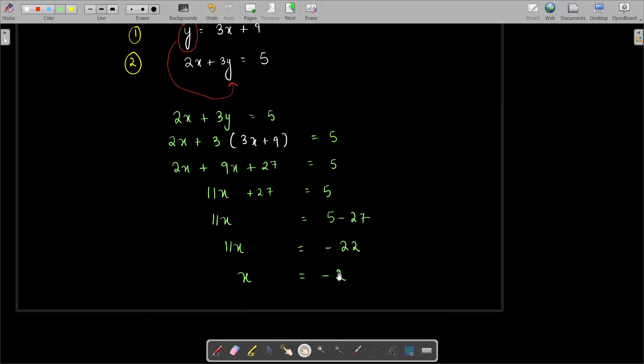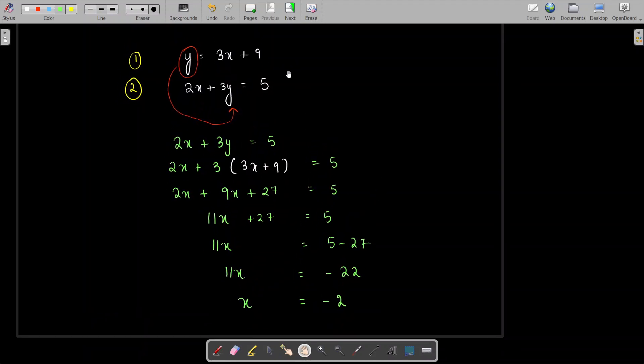So that's the value of X. Now you can put this value in any of the two given equations to get the value of Y. I am going to put this value in the first equation, so my Y is going to be 3 times negative 2 plus 9.